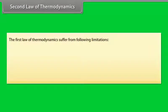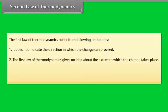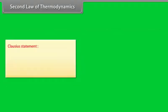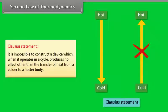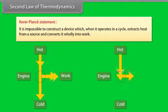Second law of thermodynamics. The first law has limitations: it does not indicate the direction in which a change can proceed, and gives no idea about the extent to which changes take place. The second law concerns the direction in which energy transformation naturally occurs. Two well-known statements are: Clausius statement — it is impossible to construct a device which, operating in a cycle, produces no effect other than the transfer of heat from a colder to a hotter body. Kelvin-Planck statement — it is impossible to construct a device which, operating in a cycle, extracts heat from a source and converts it wholly into work.